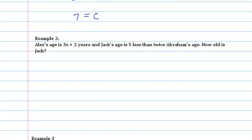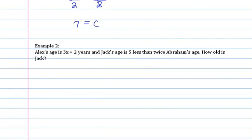Moving on to the next example. We have Alex's age is 3x plus 2 years, and Jack's age is five less than twice Abraham's age. Hold up, I think there's a mistake here. This should be Alex. We don't even know who Abraham is in this story. So again, the two gentlemen that they're talking about are Alex and Jack.